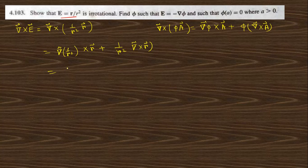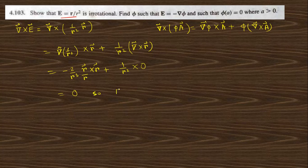Using the identity curl(φA) = grad φ × A + φ curl(A), we get: grad(1/r²) × r + (1/r²) curl(r). The gradient of 1/r² gives −2/r³ times r-hat, i.e., r-vector/r. Cross product of r-vector with r-vector is 0, and curl of r is also 0. Therefore, curl E = 0, meaning E is irrotational.